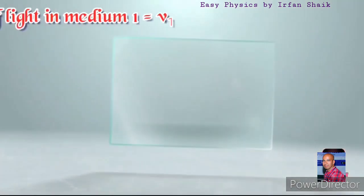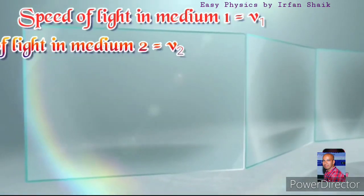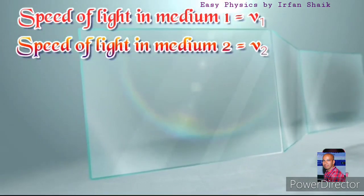Let the speed of light in medium 1 be V1, and the speed of light in medium 2 be V2.